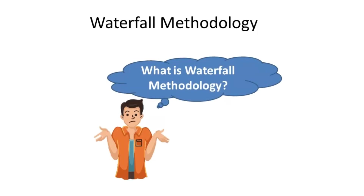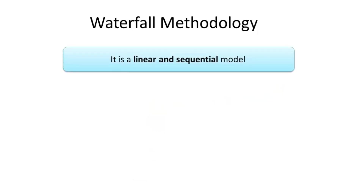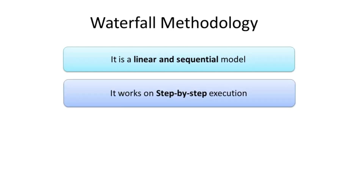Starting with: what is Waterfall methodology? It is a linear and sequential model for product development. It consists of fixed phases such as requirement, design, development, testing, and deployment. These phases and the order of execution are fixed. It starts with strict planning and step-by-step execution of these phases in sequential order. Each phase needs to be completed before moving to the next.